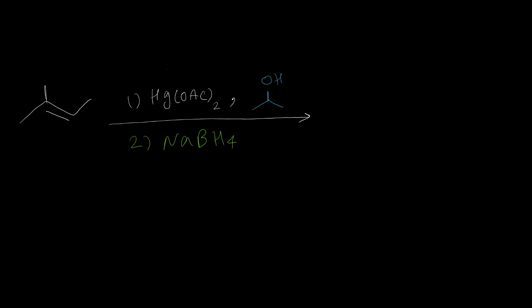In the next example, this carbon is secondary, this carbon is secondary, and this carbon is tertiary, so we need to attach OR to the tertiary carbon. The tertiary carbon also has a bond here, and the OR group — an O-isopropyl group — is placed there, with hydrogen on the adjacent carbon, which we can omit from the structure.